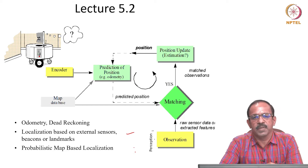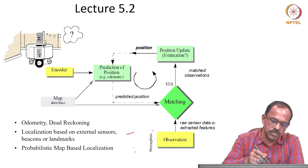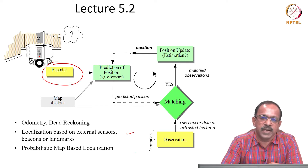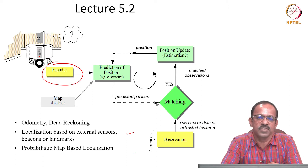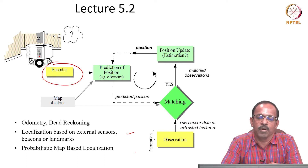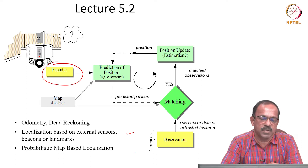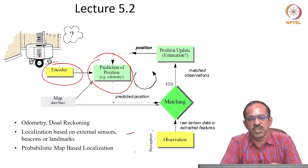The first step in localization of a mobile robot is the odometry-based localization, where we use the encoders on the robot and use the encoder data to find out how much the robot has moved over a period of time and then use that information to find the new position and orientation of the robot. This is called dead reckoning, where position and orientation information is collected from the sensors. That is the first step where you predict the position using odometry.